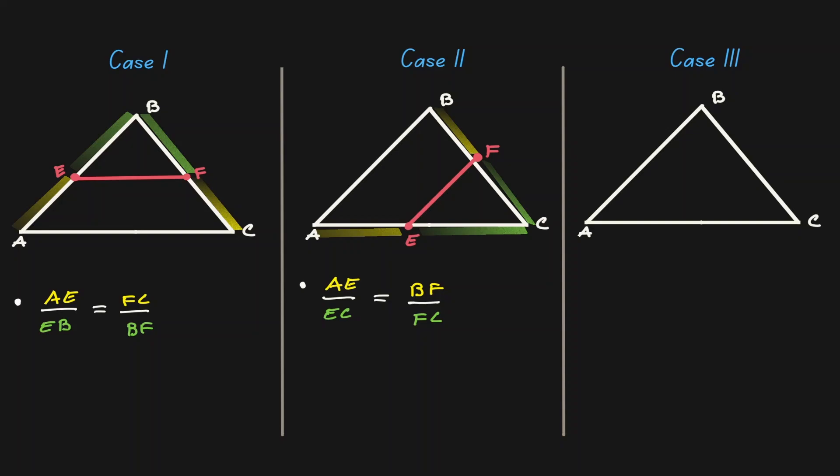Now let's consider our third case, where we draw a parallel line to BC. And if that's the case, notice that AB got cut into AE and EB, and AC got cut into AF and FC.